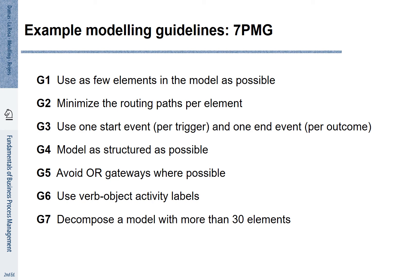Rule five says we should avoid OR gateways where possible. Sometimes, in very specific situations, OR gateways are very helpful. But we should use them scarcely. Because for some readers of the model, they are quite complex. Guideline six says we should use verb object activity labels.